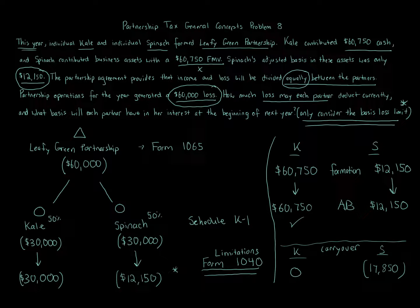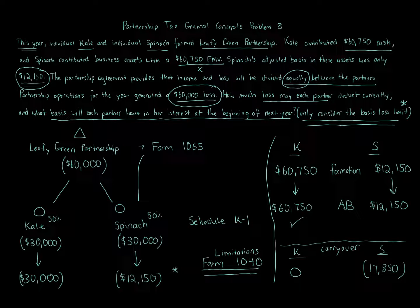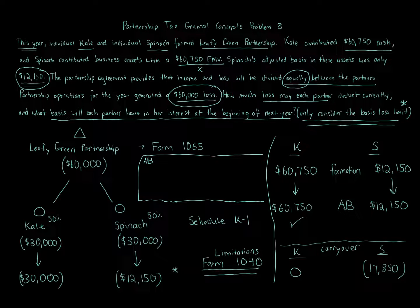There is one last thing to address in the problem: what basis will each partner have in her interest at the beginning of next year? We've looked at the amount of loss each partner can take and the carry-over, but we haven't yet calculated the adjusted basis going forward. So let's create a new area for the adjusted basis at the beginning of next year. We have Kale and Spinach.